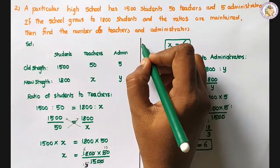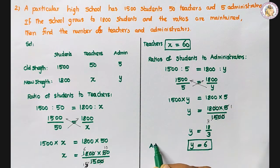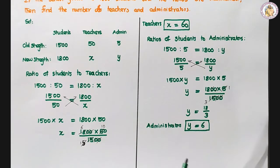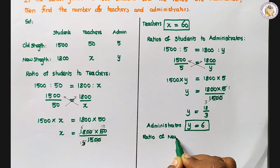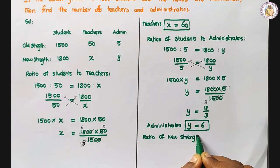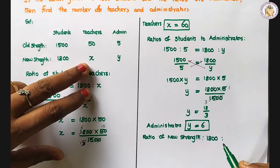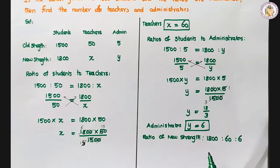So number of teachers is x equals 60, and number of administrators is y equals 6. Therefore the ratio of new strength is 1800 is to 60 is to 6. That is the answer.